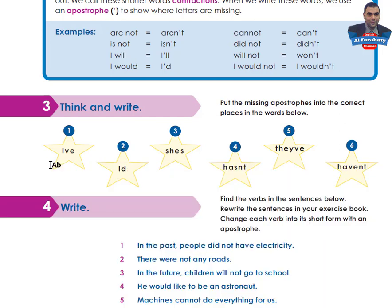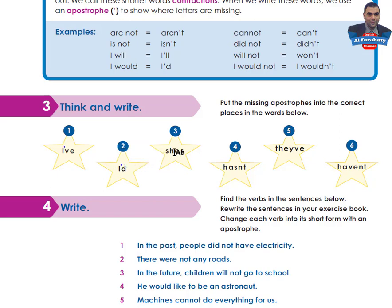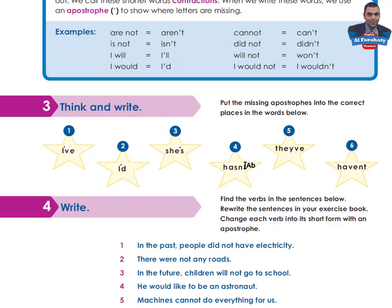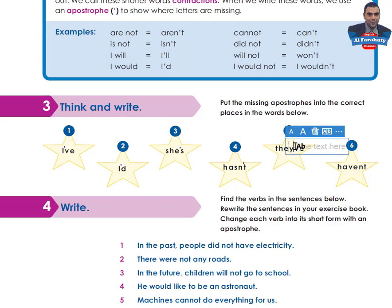Hello again. Here are the answers: 'I'd' — we have an apostrophe here. 'She's' — we have an apostrophe here. 'Hasn't' — yes, we have an apostrophe here. 'Leave' — put an apostrophe here. 'Haven't' — the missing apostrophe is here.